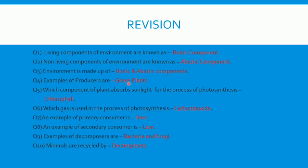Question 5: which component of plant absorbs sunlight for the process of photosynthesis? Answer is chlorophyll. Green plants have chlorophyll in their leaves, and that's why they are able to prepare food, because chlorophyll is responsible for trapping sunlight. Question 6: which gas is used in the process of photosynthesis? Answer is carbon dioxide.